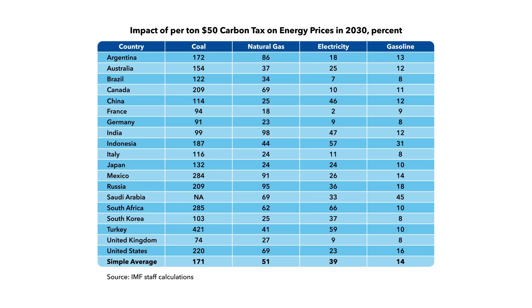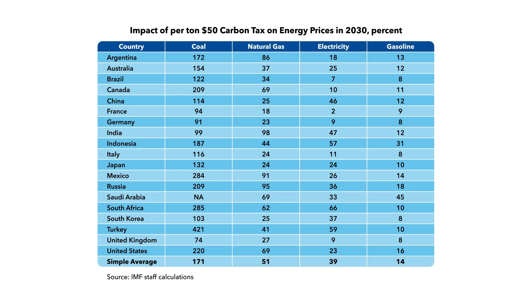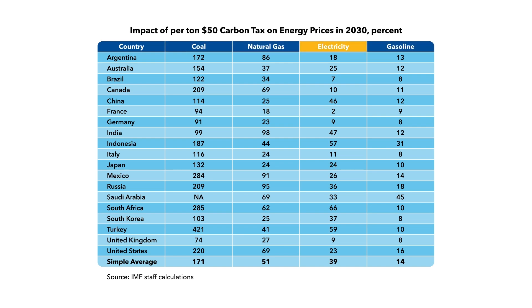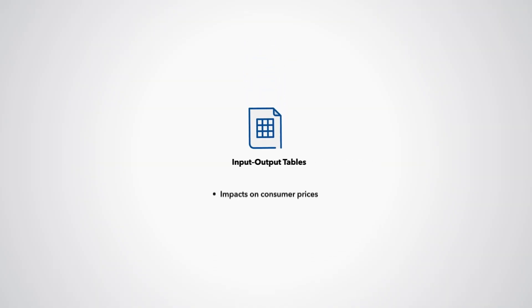The immediate burden of carbon pricing on households and firms depends on its impacts on energy prices. For example, averaged across the G20 countries, a $50 per tonne carbon price in 2030 would increase coal, gas, electricity and gasoline prices by about 170, 50, 40 and 15% respectively. The absolute price increases are similar across countries for coal, gas and gasoline, though the absolute price increase for electricity will vary with a country's generation mix. Coal and some electricity, natural gas and petroleum products are intermediate inputs, so it is important to trace through cost increases for these fuels into higher prices for consumer goods in general. We do this using input-output tables.